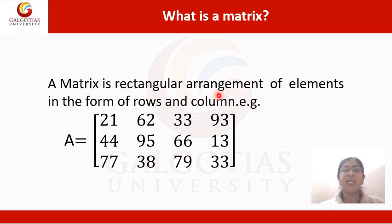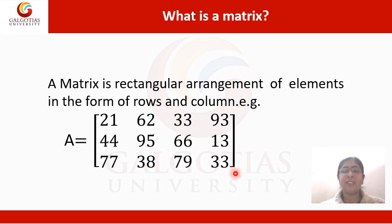It is said to be a rectangular arrangement of elements. These are said to be the columns of the matrix and this arrangement is said to be the rows of the matrix. So, it is a matrix of order 3 rows and 4 columns, written as 3 by 4.